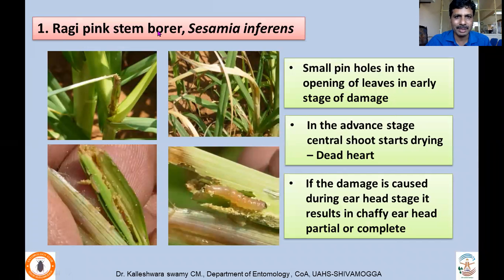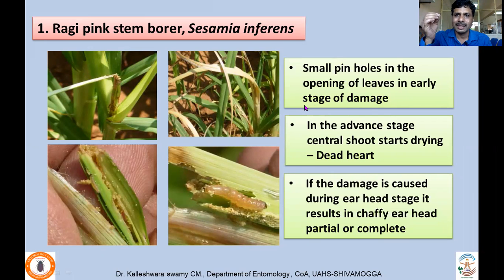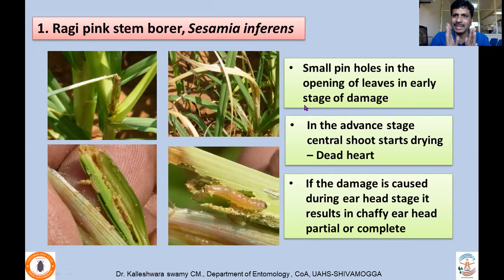The first important pest occurring in the early stage of the crop is pink stem borer, Sesamia inferens, belonging to family Noctuidae. Like in sorghum or maize, we typically find small pinholes in the leaves. Sesamia inferens causes this damage when the leaves are still attached to the stem — the larva enters by making a small hole into the stem, and when the leaves open up, we find those pinholes.